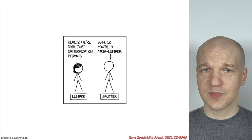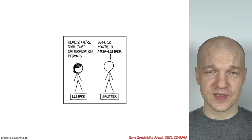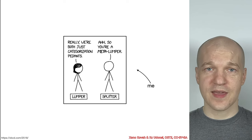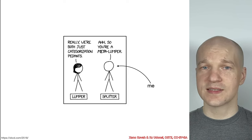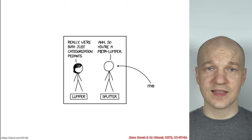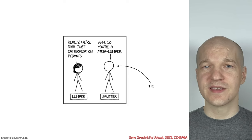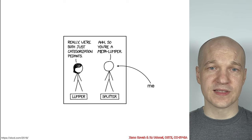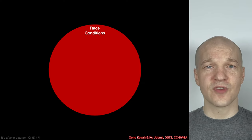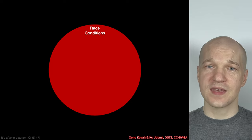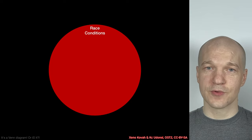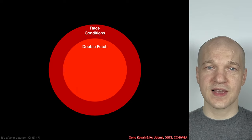There are two types of people in the world: the lumpers and the splitters. I am the latter type — I like a good taxonomy. I like to split things up finely and say, what is this and how is it different from something else? So let me give you a Venn diagram of race conditions. A subclass of race condition that we're going to see in this class is the double-fetch vulnerability.